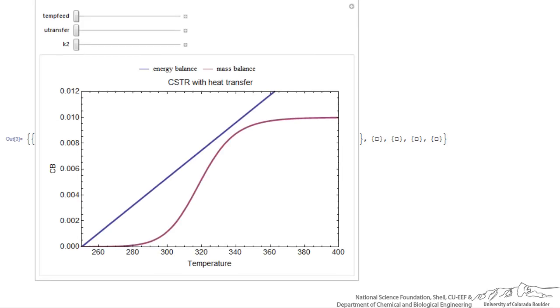We have the option of changing the values of three variables in this case. The linear plot is the energy balance, and the non-linear purple graph is the mass balance. Where these two curves intersect correspond to steady state solutions of the mass and energy balance for the CSTR. The current condition is essentially zero conversion, no concentration of product, at the feed temperature.